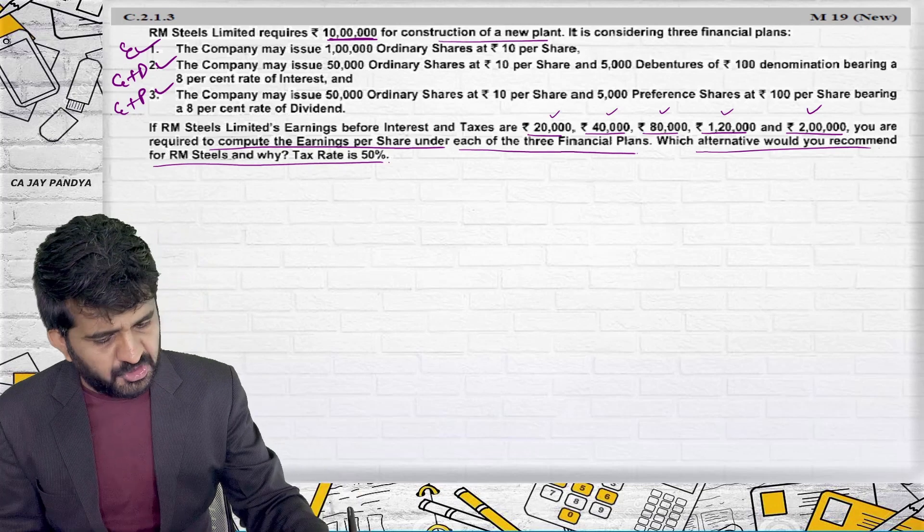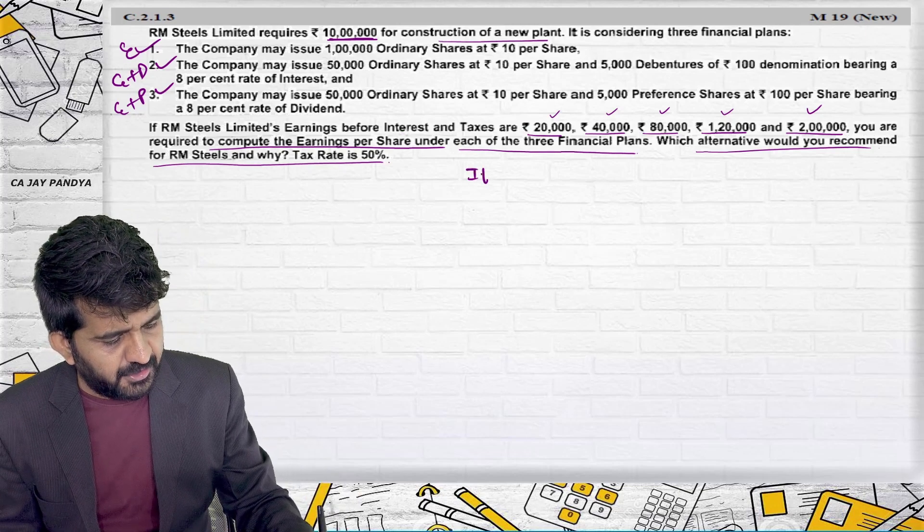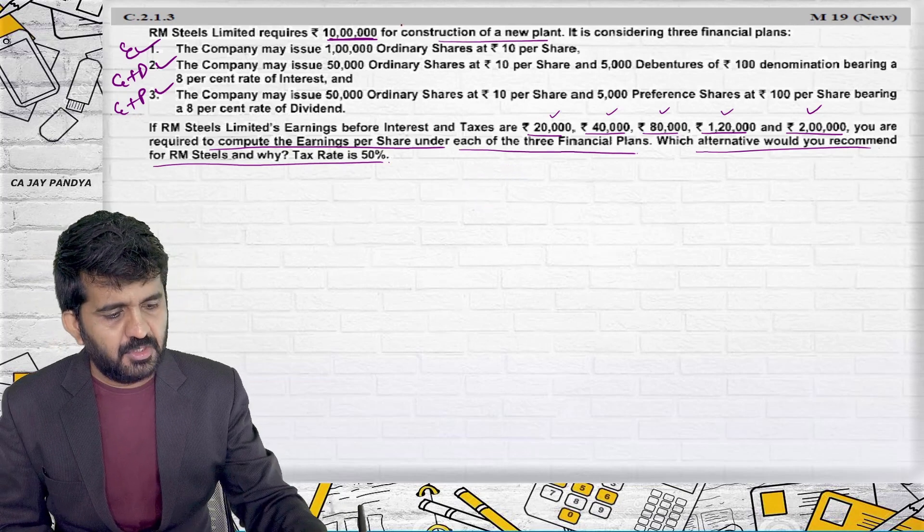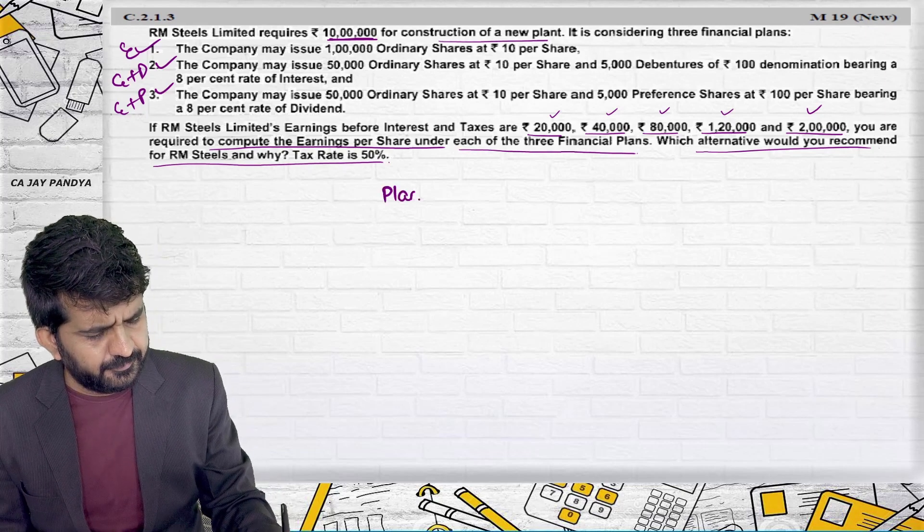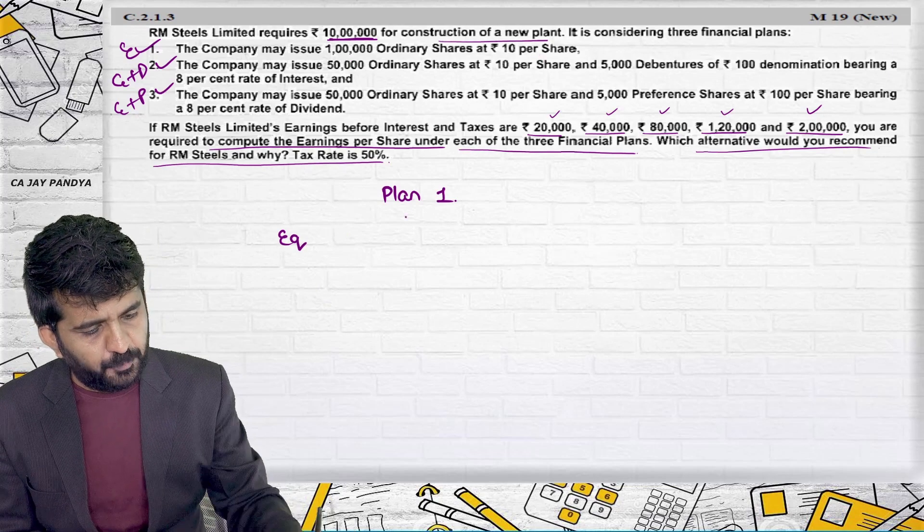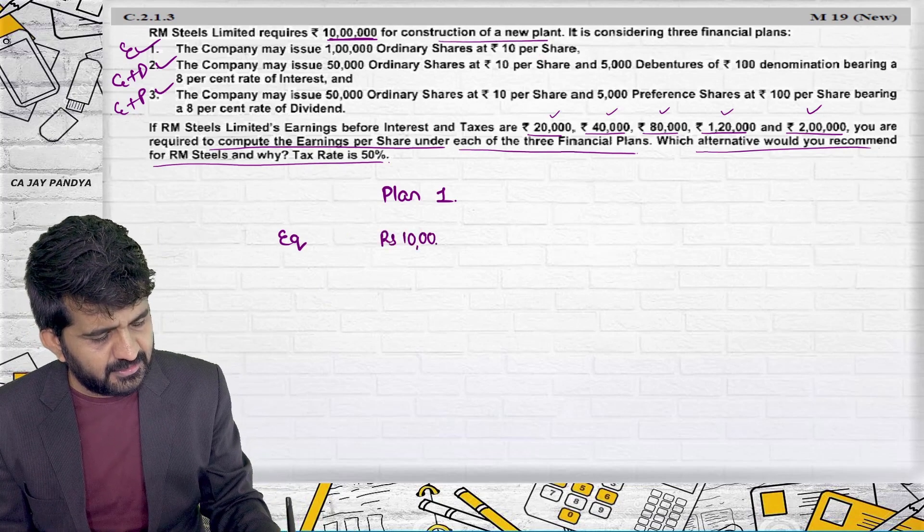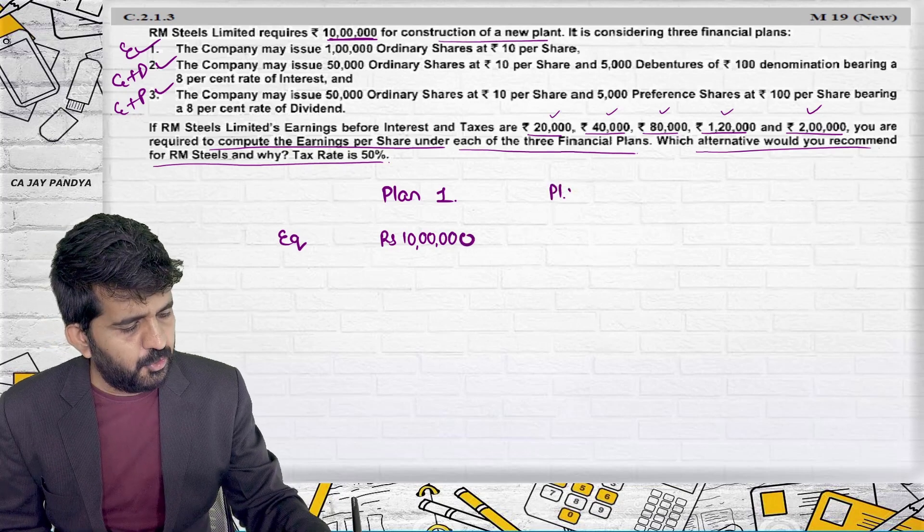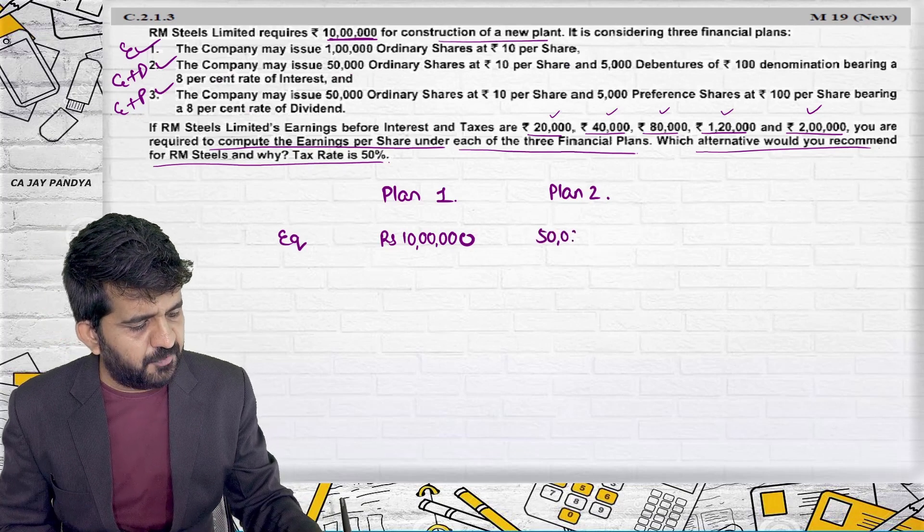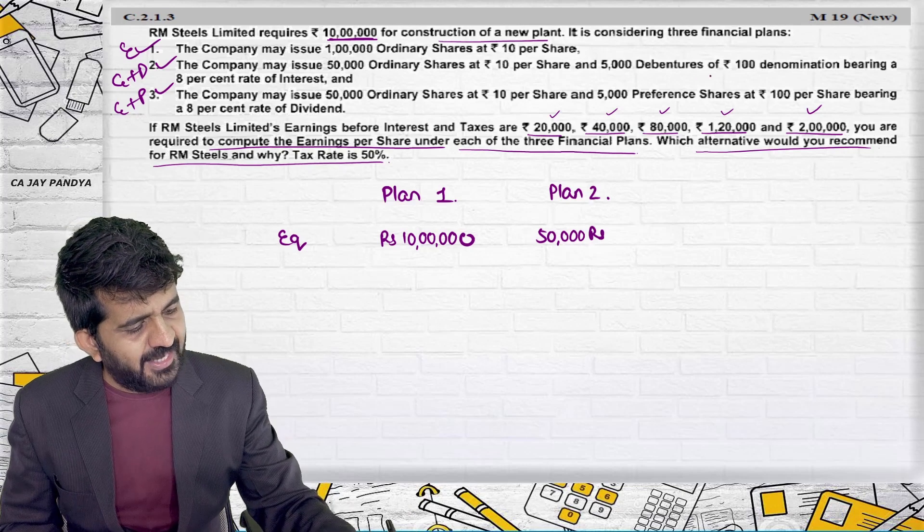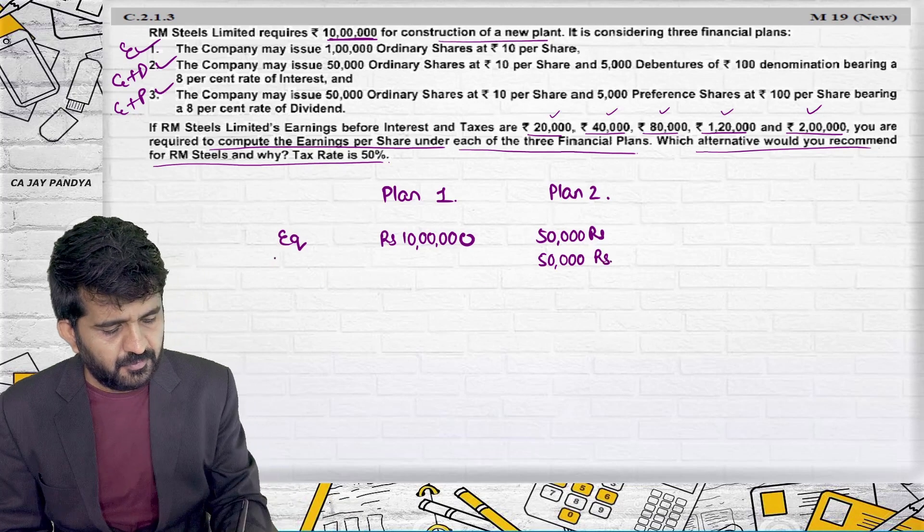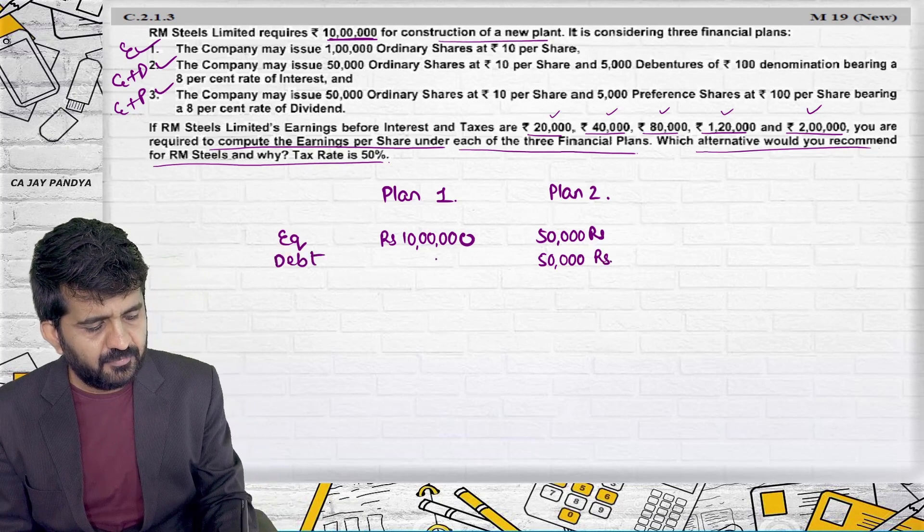Let me do this first question. If EBIT is 20,000, let me first write down all three financial plans. Plan number one, equity, 1 lakh into Rs. 10 is Rs. 10 lakhs. Plan two, the company may issue 50,000 at the rate of Rs. 10 that is Rs. 50,000 equity. 5,000 debentures of 100, 5,000 into Rs. 100 will be Rs. 50,000, will be nothing but debt. In this case, debt is zero.